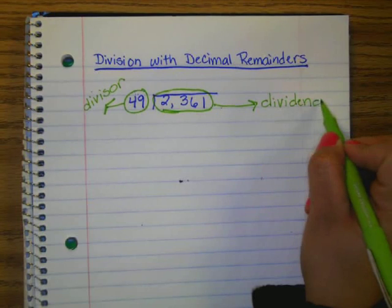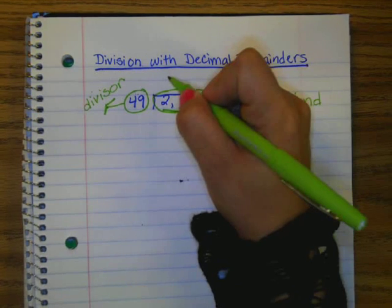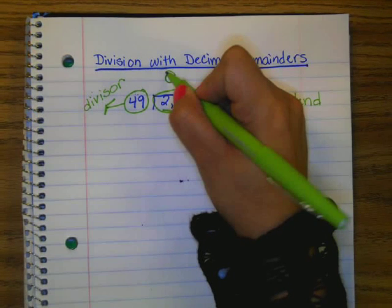What do we call the answer to a division problem? Sophie? Is that a hand? Okay. Who knows? What do we call the answer to a division problem? Jackson Gray? Oh, that's you. It does? Oh, that's a post-it. Everybody say it. Okay, so the quotient is the answer.